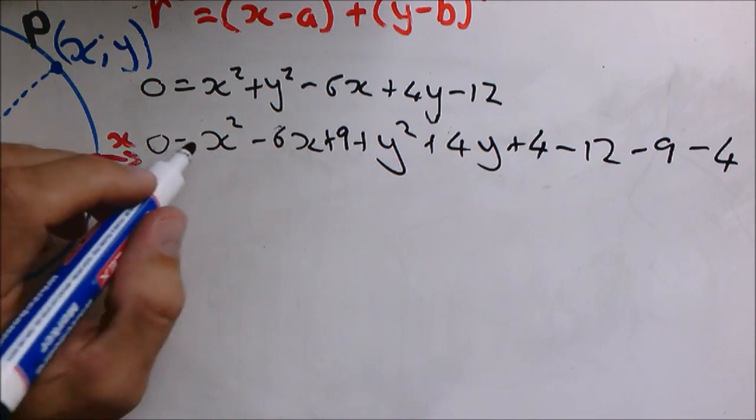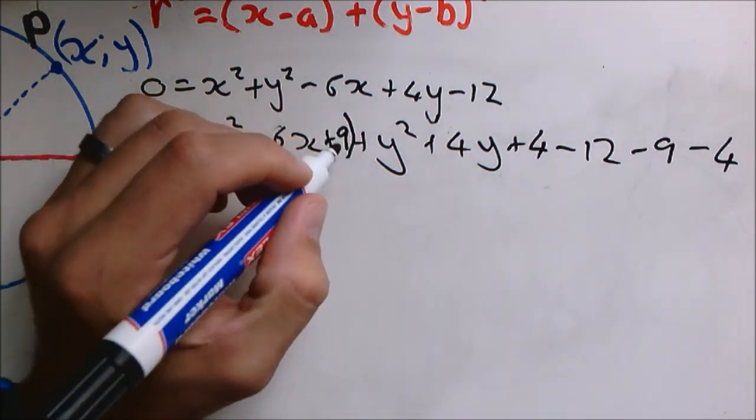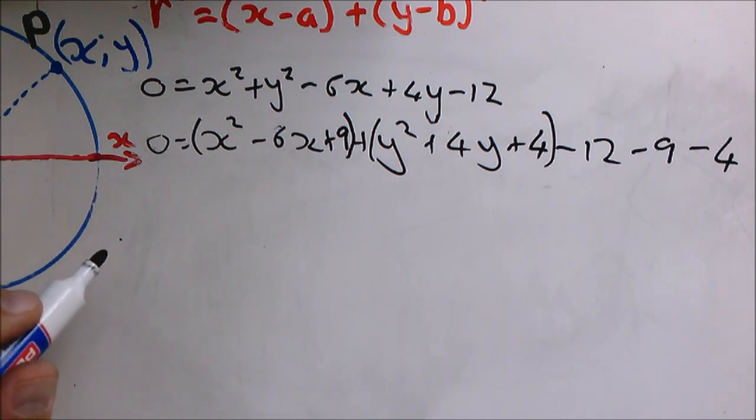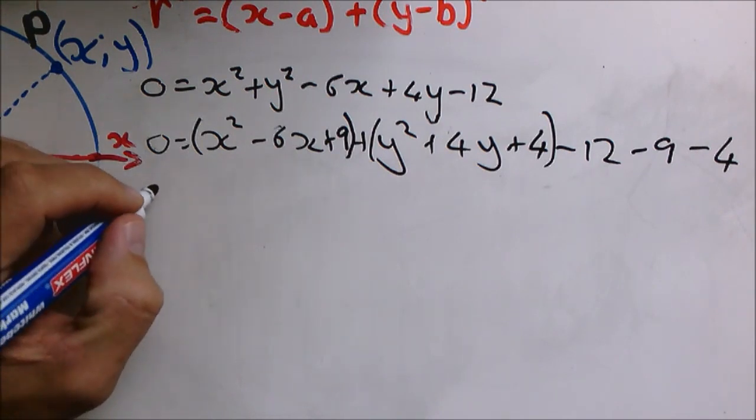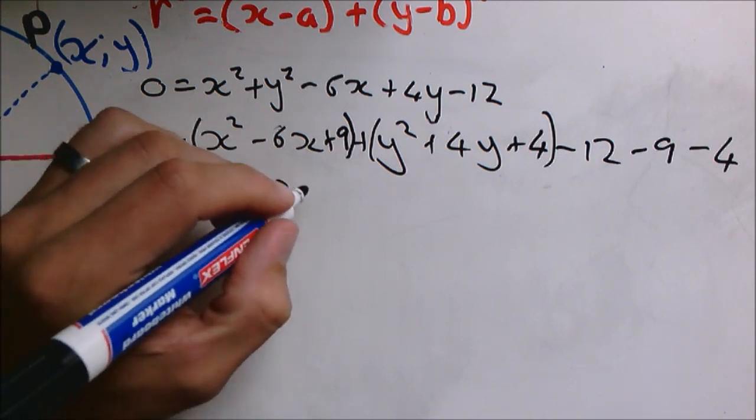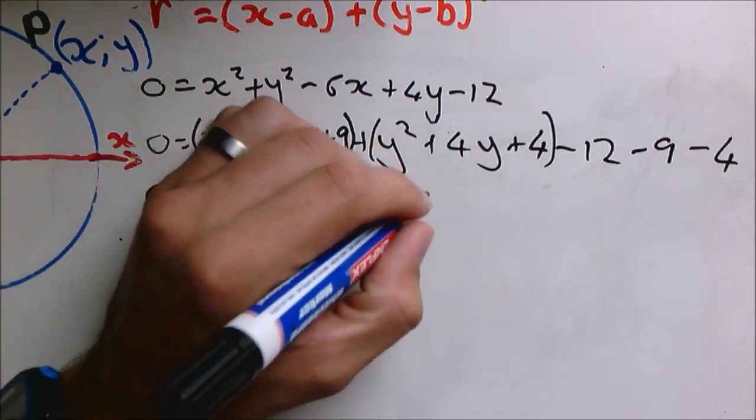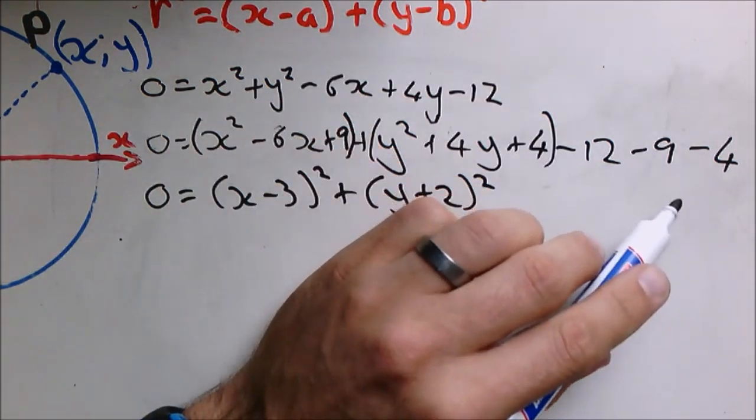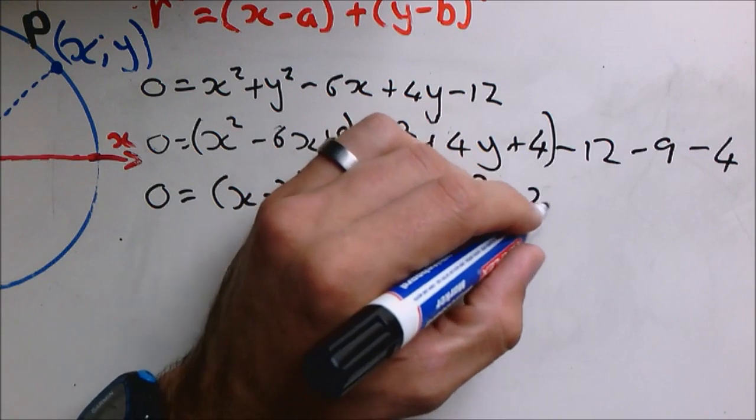And now I would suggest that you put brackets around those so you can easily factorize. So 0 equals bracket x minus 3 square plus bracket y plus 2 squared. If you simplify those, it becomes minus 25.